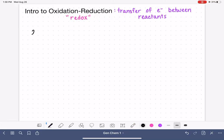Here is an example of a redox reaction. Two magnesium atoms reacting with oxygen gas to make two compounds of magnesium oxide.